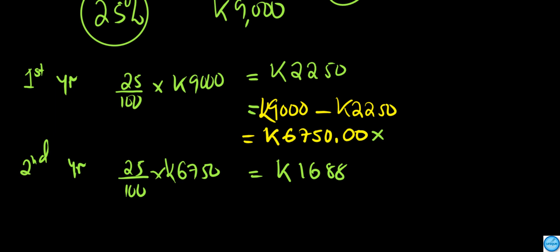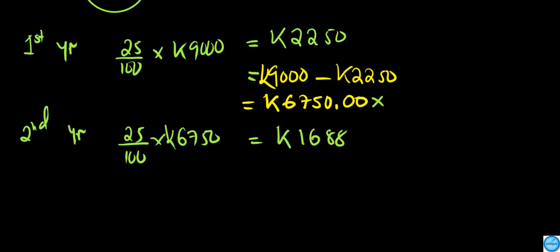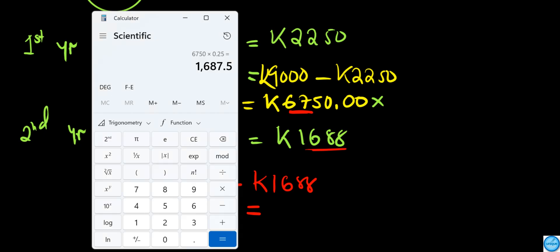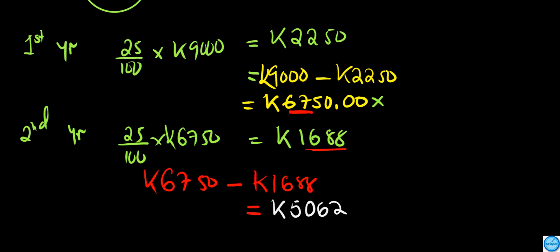That is the depreciation in the second year. To find the remaining book value of our sprayer at the end of year two, we subtract: 6,750 minus 1,688. Using the calculator: 6,750 minus 1,688 equals 5,062. So 5,062 is the book value at the end of year two.